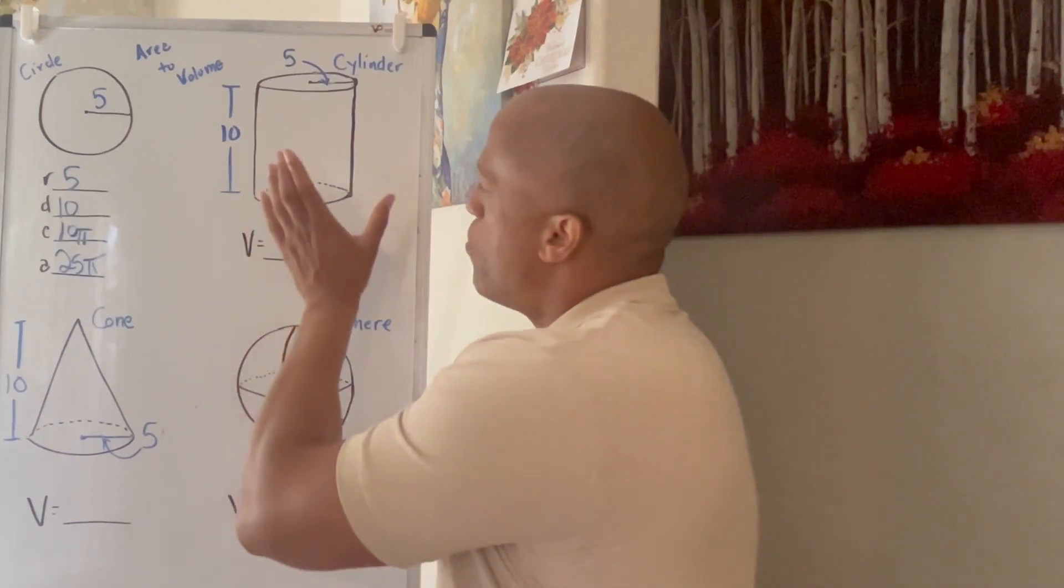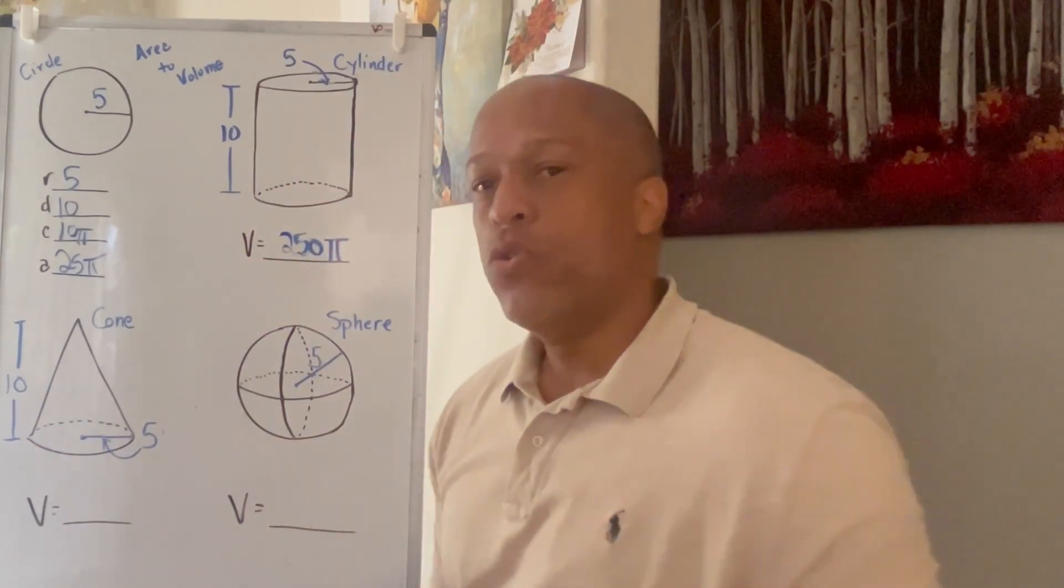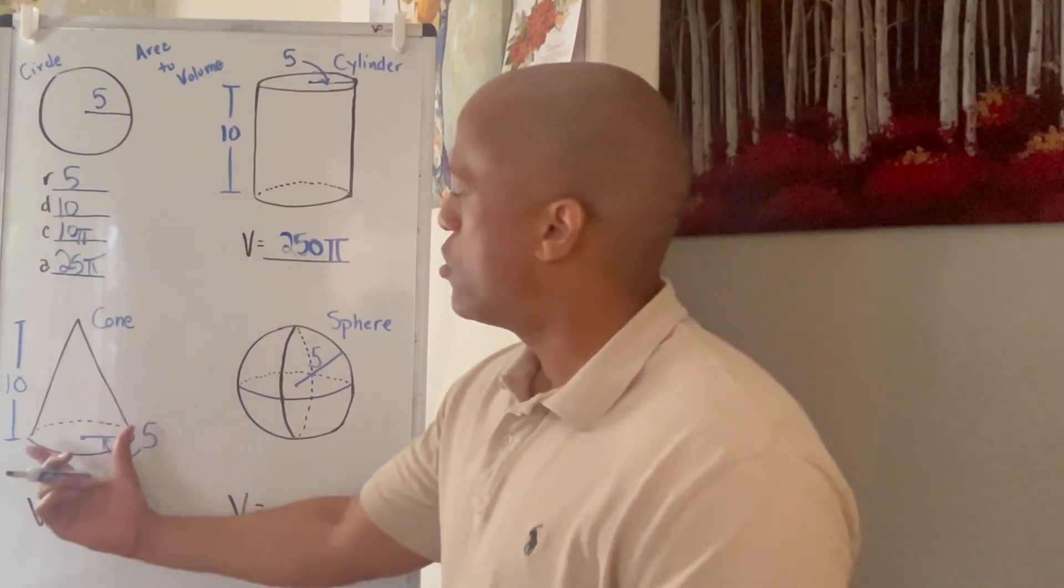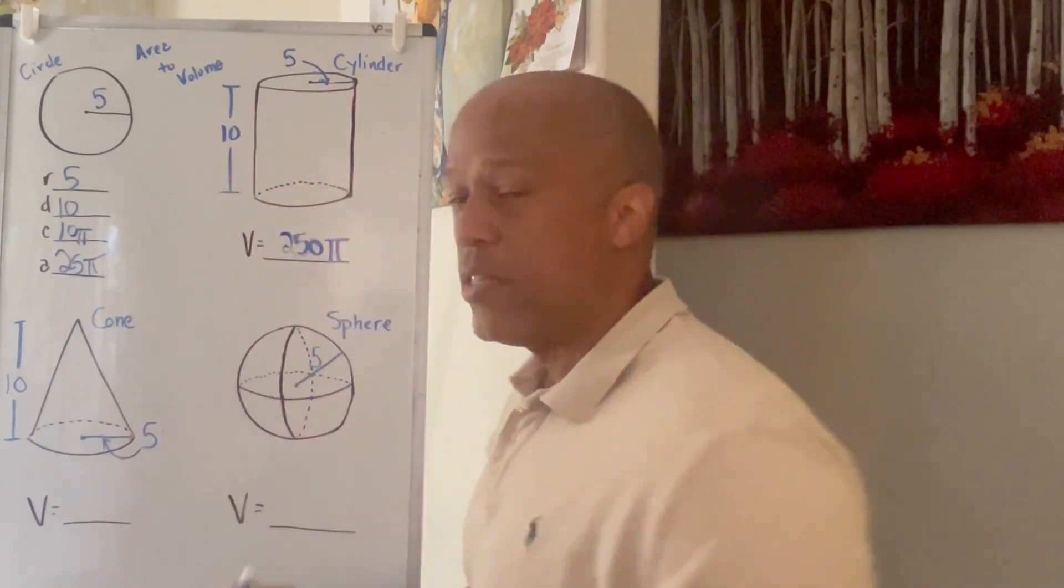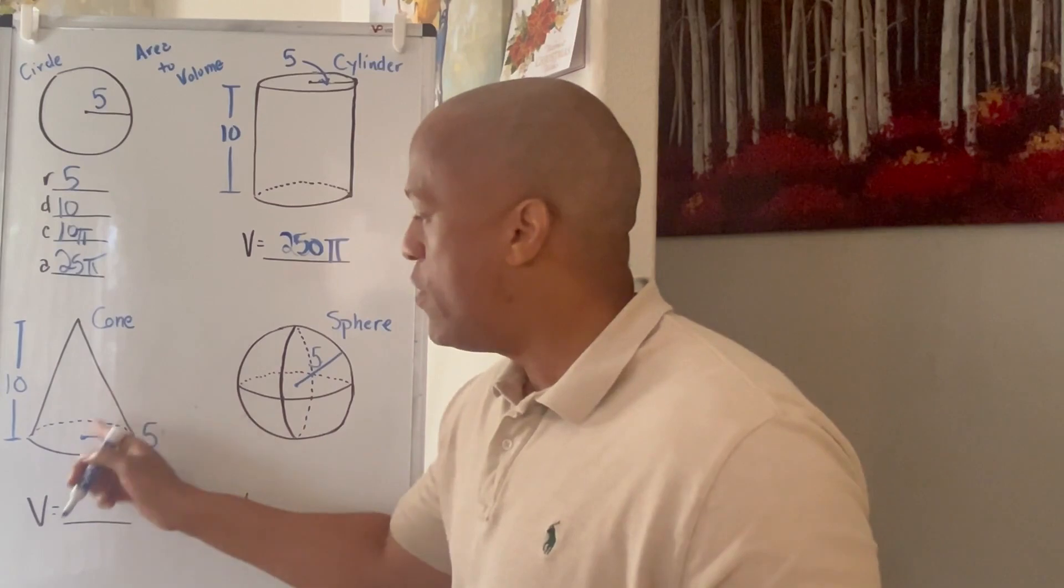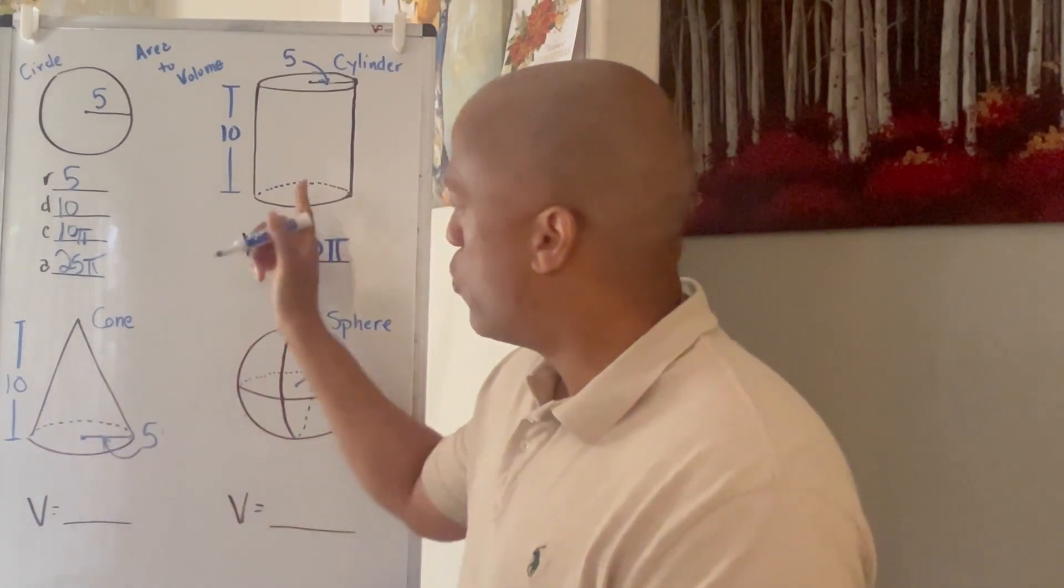Now, when you go from a cylinder to a cone, all you have to do really is understand the simple fact that if I took this cone and put it inside the cylinder, and if I could squish it around the edges, I could actually fit three of these cones in one cylinder. That's right. Three of those will fit in one of them.